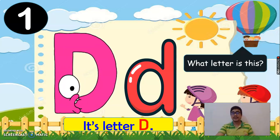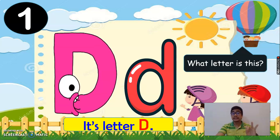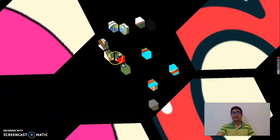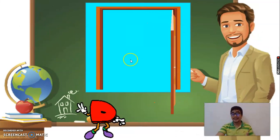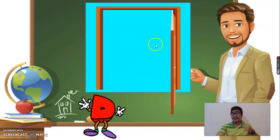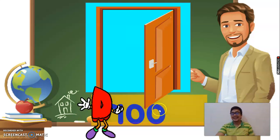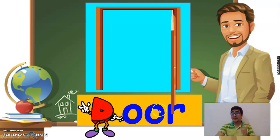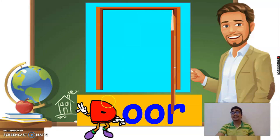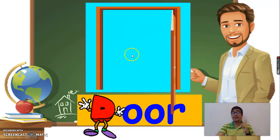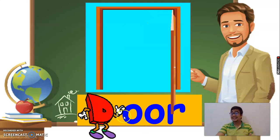Very good. I'll show you two words that start with the letter D, with the beginning sound D, D, D. So let's start. Can you tell me what is it? It's a door. Door begins with the letter D. Again, letter D. Good job. What is it? It's a door.